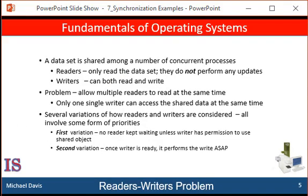Suppose that a database is shared among several concurrent processes. Some of these processes may want to only read the database, whereas others may want to update, which involves reading and writing the database. The first are referred to as readers, and the latter as writers. If two readers access the shared data simultaneously, no problem will arise. However, if a writer or some other process, either a reader or a writer, accesses the database simultaneously, there may be a serious problem.